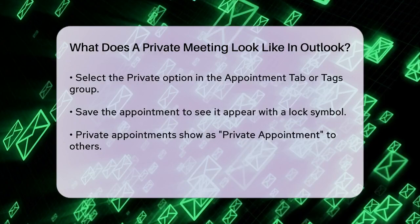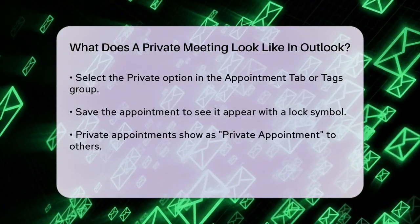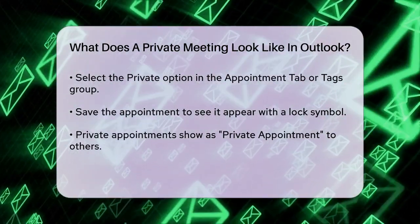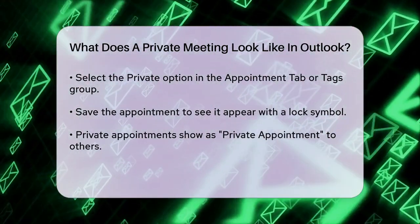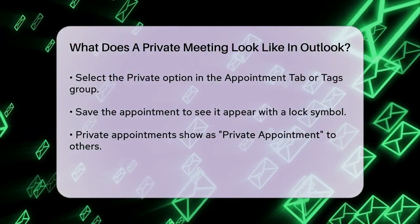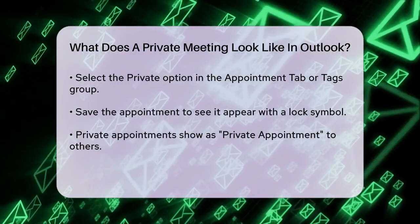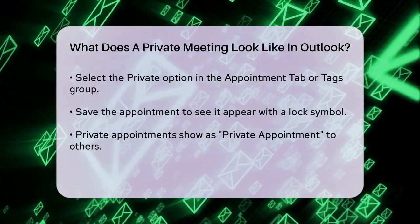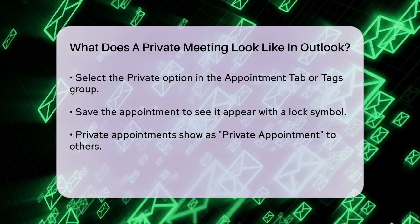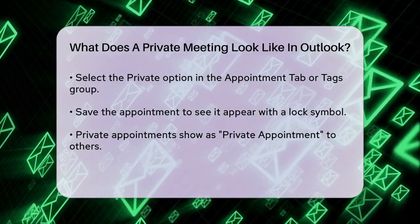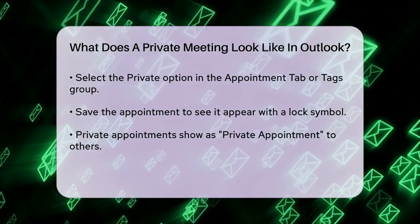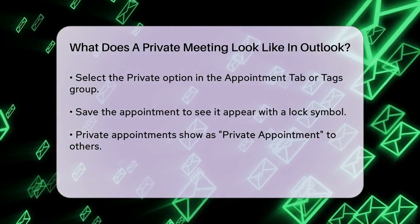Once you save the appointment, it will appear on your calendar with that lock symbol. For others who have access to your calendar, a private appointment will simply show as Private Appointment without revealing any of the event details. However, if you have granted someone delegate access with permissions to view private items, they will be able to see the details of your private appointments.